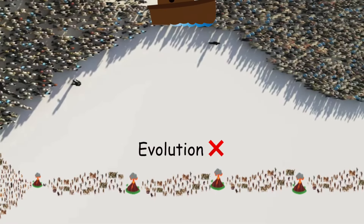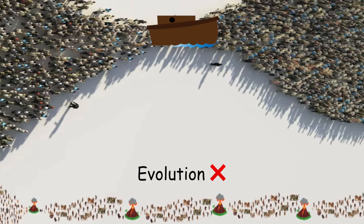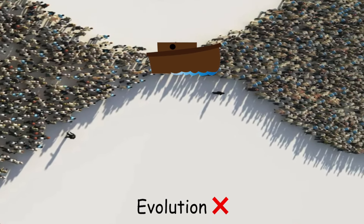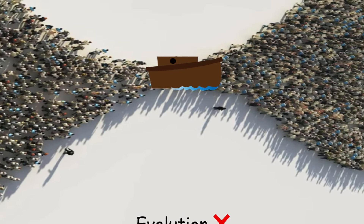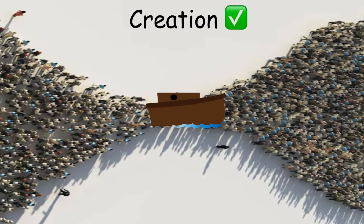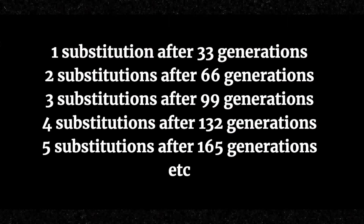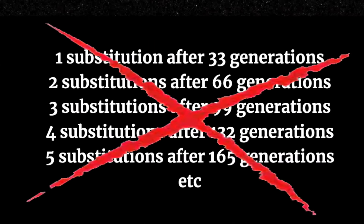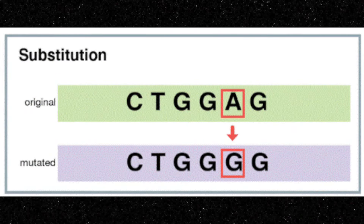So I hope that explains how substitution rates work based on these studies, which are very vague and say one out of every 30 to 33 generations. It's not in a linear fashion — you don't just count one up every 33 generations until you land on a date. These studies are showing how often new substitutions arise, not when they reach fixation. That's based on population size.